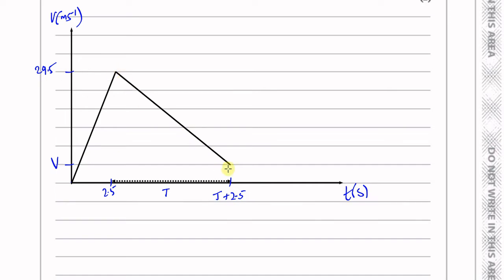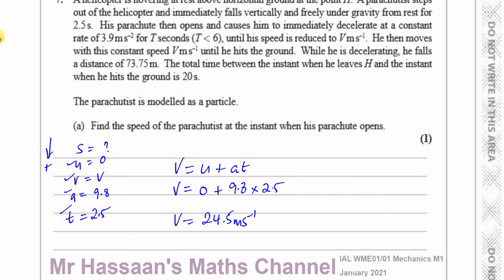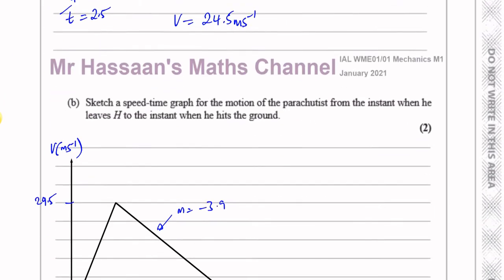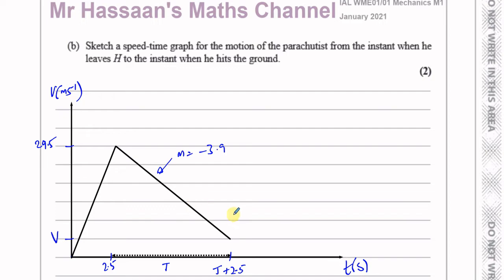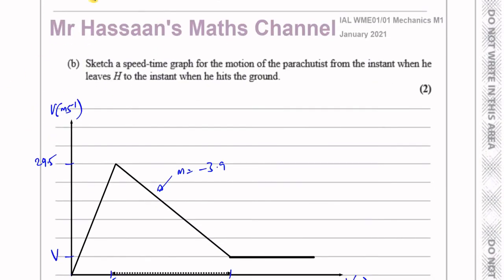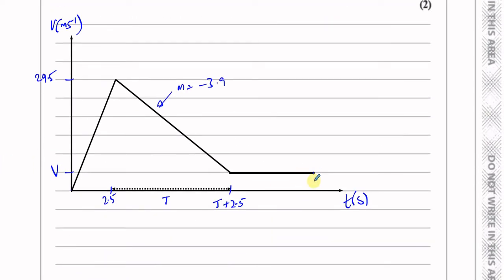He goes from 24.5 to V in T seconds, and the gradient of this line is equal to minus 3.9 because his deceleration is 3.9 meters per second squared. Then he continues at the constant speed V until he hits the ground after a total of 20 seconds. So 20 seconds is the total time marked on the x-axis. That completes the speed-time graph for part B.